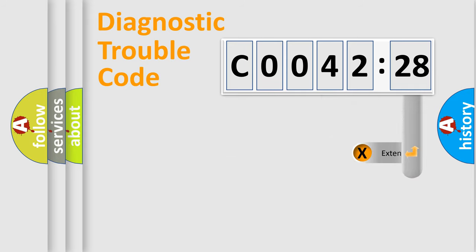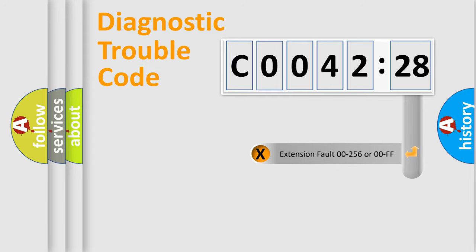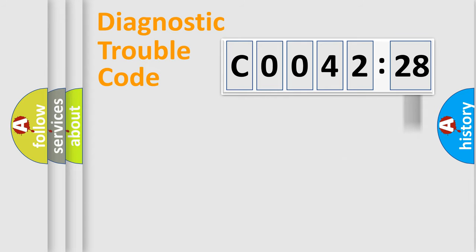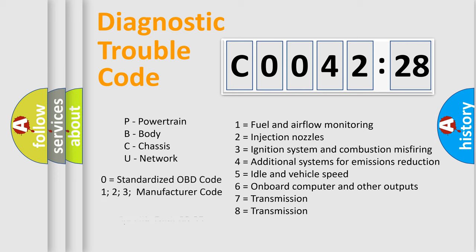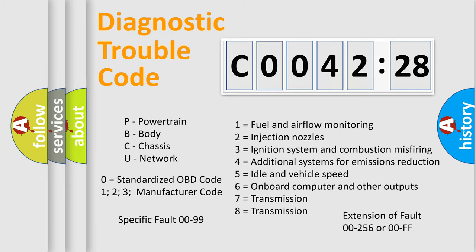The add-on to the error code serves to specify the status in more detail — for example, a short to ground. Note that such a division is valid only if the second character code is expressed by the number zero.